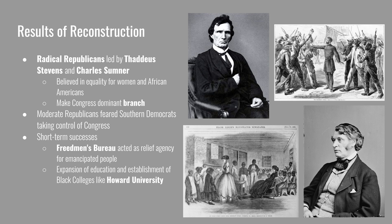There were some short-term successes of Reconstruction. The Freedmen's Bureau was a federal agency created by Congress that acted as a relief agency for emancipated people, responsible for establishing schools, providing relief, food, and even land in some instances. In Georgia, some confiscated land belonging to former Confederate officials was given out, though some was later taken back once those officers swore loyalty to the United States. Reconstruction also led to an expansion of education and the establishment of Black colleges like Howard University, Fisk University, and Atlanta University — now called historically Black colleges and universities, or HBCUs, still around today.